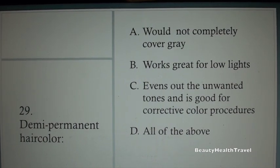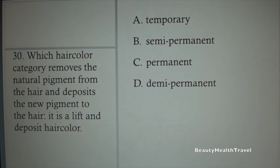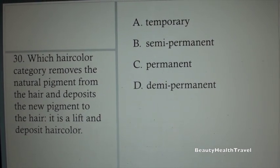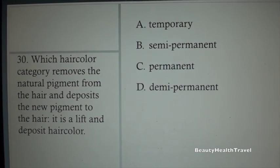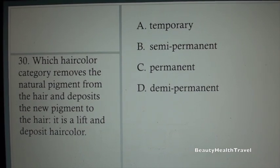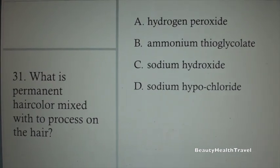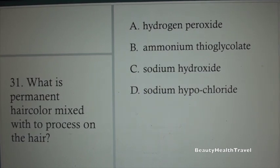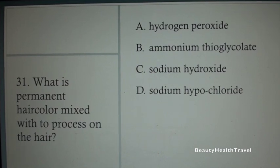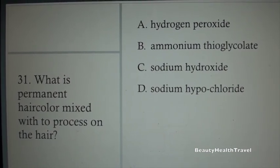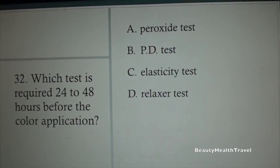Question 28: The most versatile hair color that refreshes faded permanent hair, working as a glaze and used as a toner, is: A. Metallic dye, B. Demi-permanent, C. Temporary dye, D. Compound color. Question 29: Demi-permanent hair color: A. Would not completely cover gray, B. Works great for low lights, C. Evens out unwanted tones and is good for corrective color, D. All of the above.